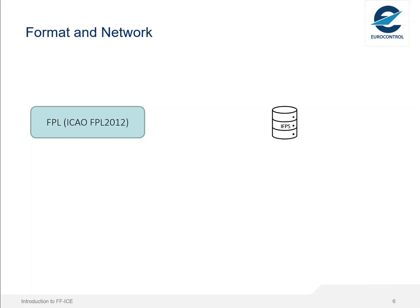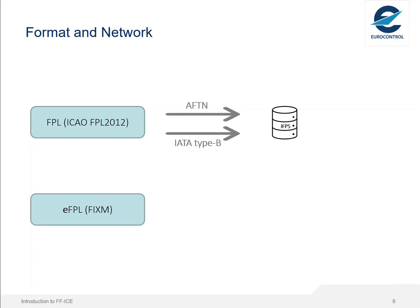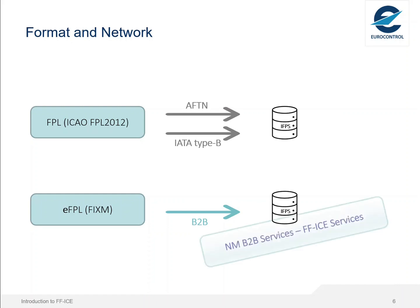The FPL in ICAO FPL 2012 format is sent to the IFPS via either AFTN or SITA type-B network. For an eFPL in FIXM, due to the format and size of the message, it is sent to IFPS via a B2B connection. This connection is enabled by the use of the FFI services, which are part of the NMB2B services.